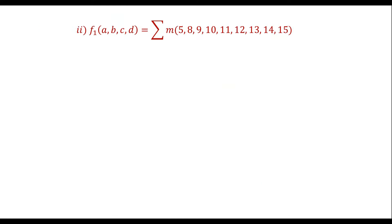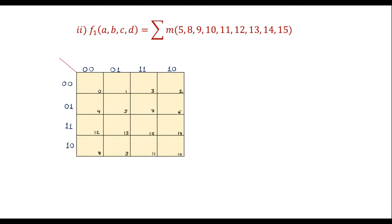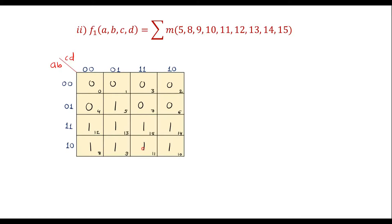Now consider the second problem where F1(A,B,C,D) = Σm(5,8,9,10,11,12,13,14,15). Since there are four variables, we use a four variable K-map with A, B as row inputs and C, D as column inputs. For min terms 5, 8, 9, 10, 11, 12, 13, 14, 15 we enter 1; the remaining cells are 0.